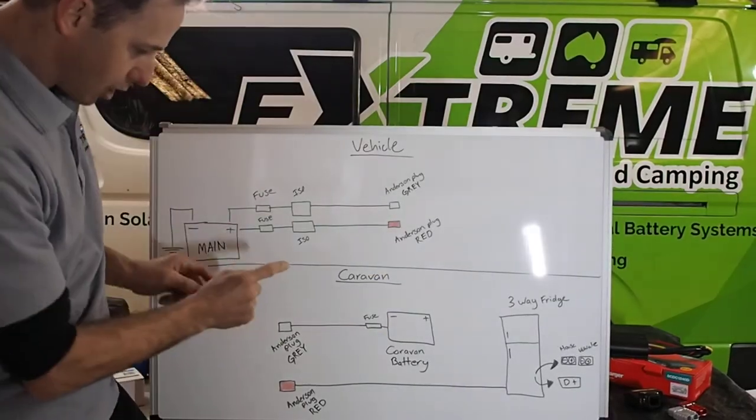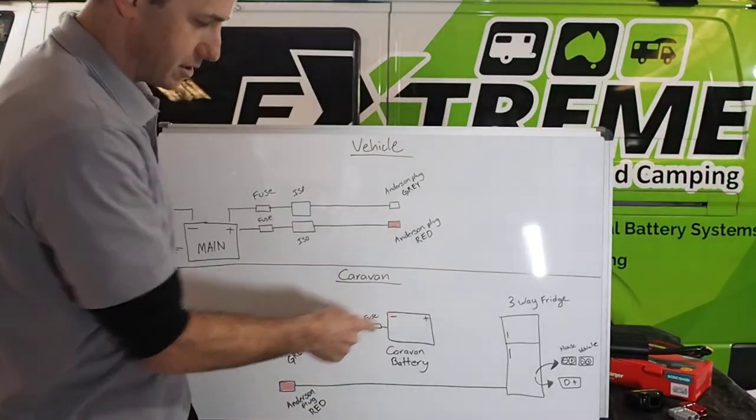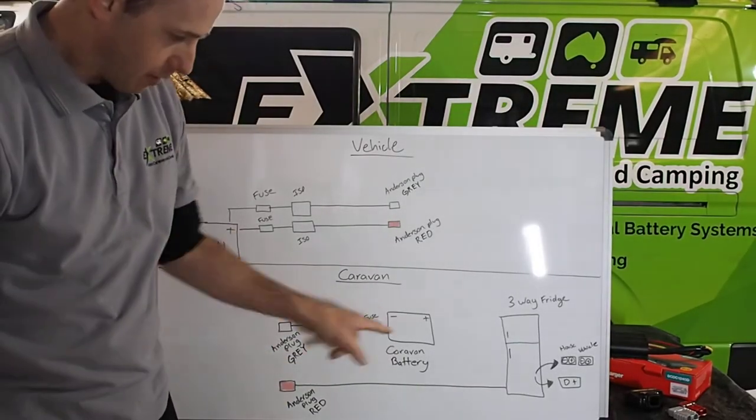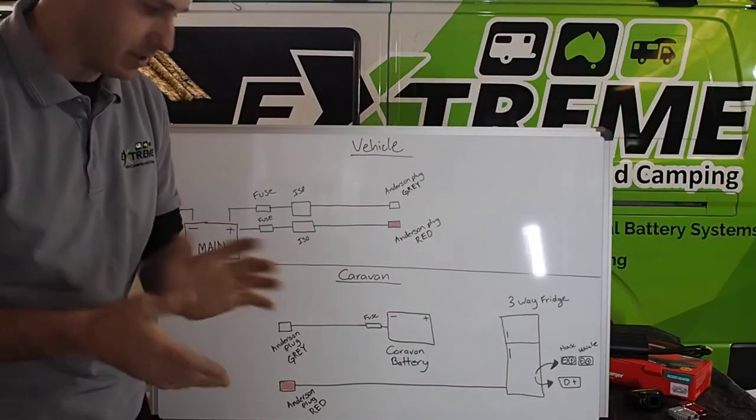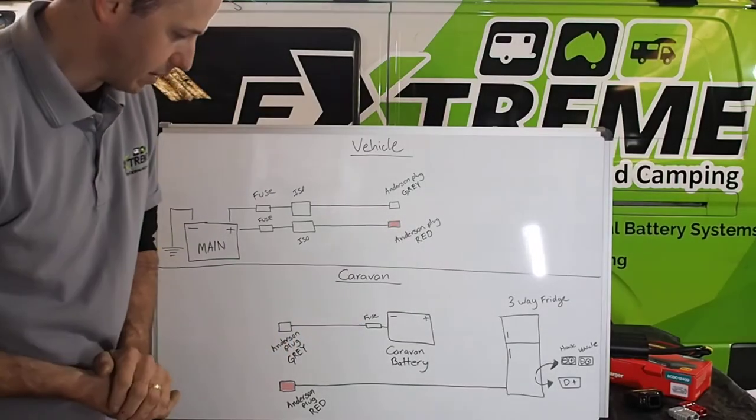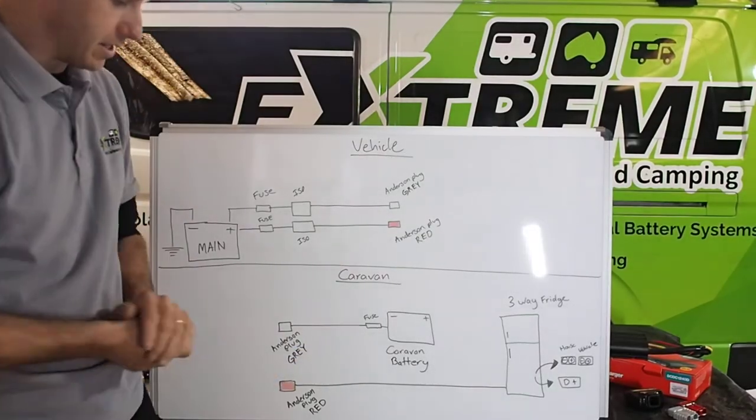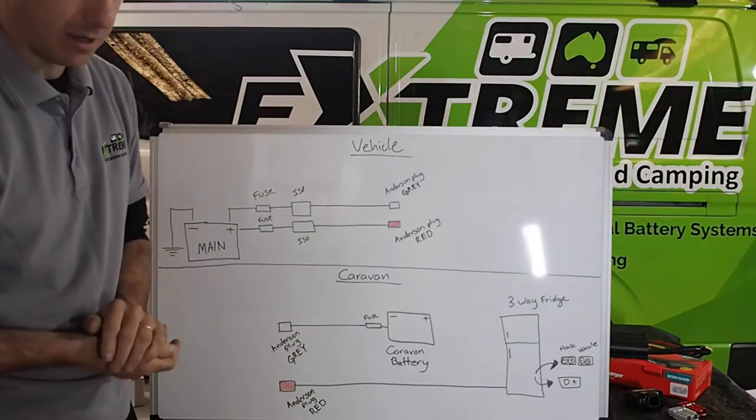Now, the caravan side. The grey Anderson plug, fused, charge the battery. Very simple. Most vans are set up like this now. Like I said, we'll dive into DC charging shortly. That basically just runs in between it. On the Anderson plug, on the red side of things, this is where it gets interesting.